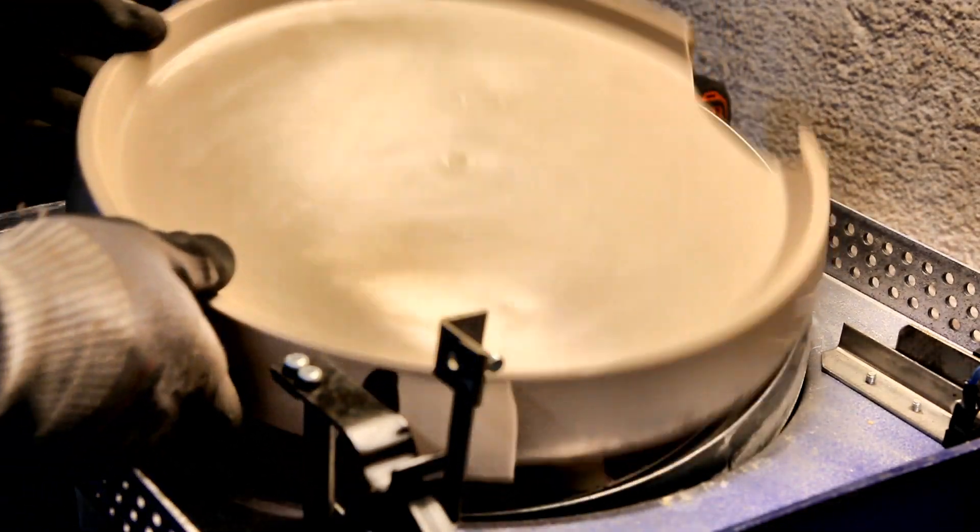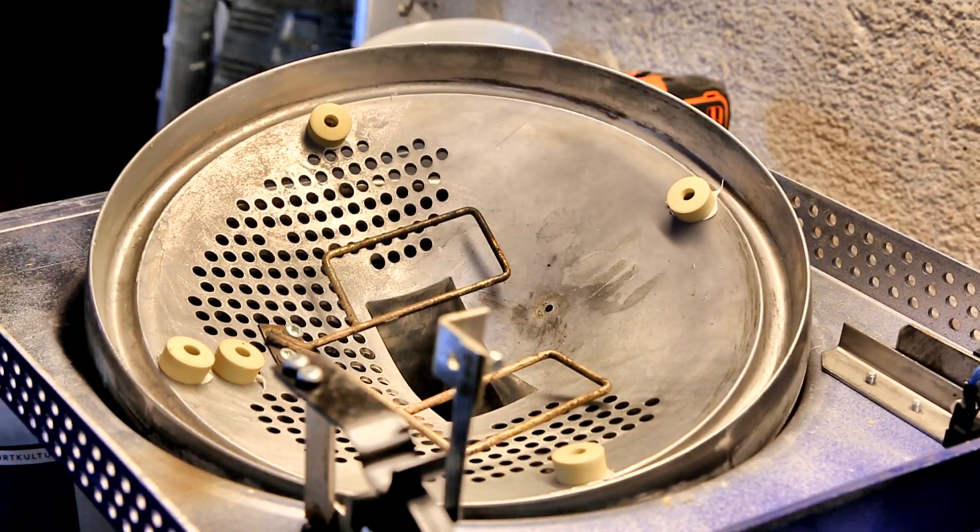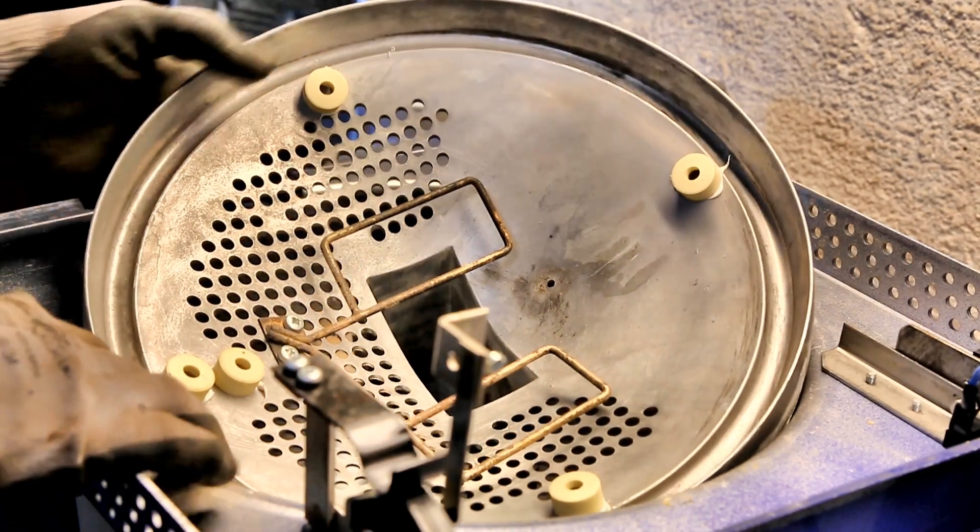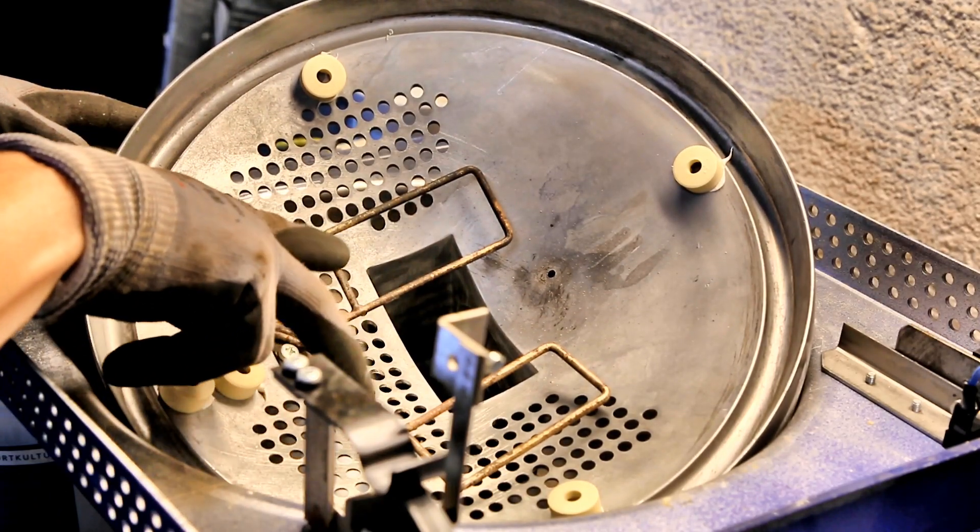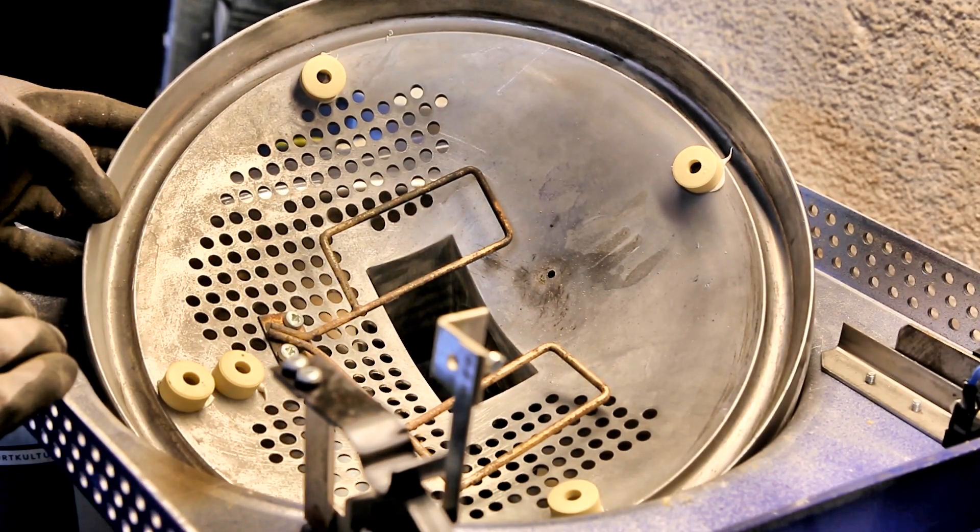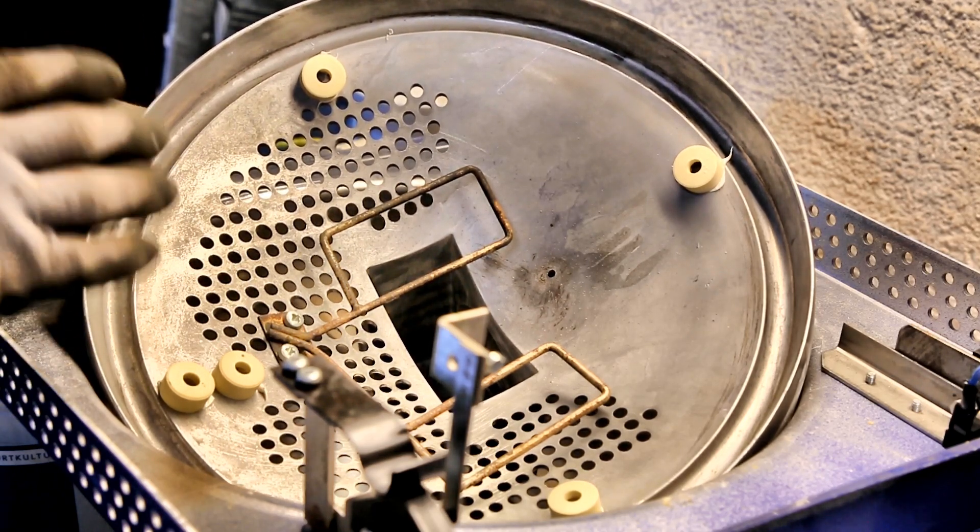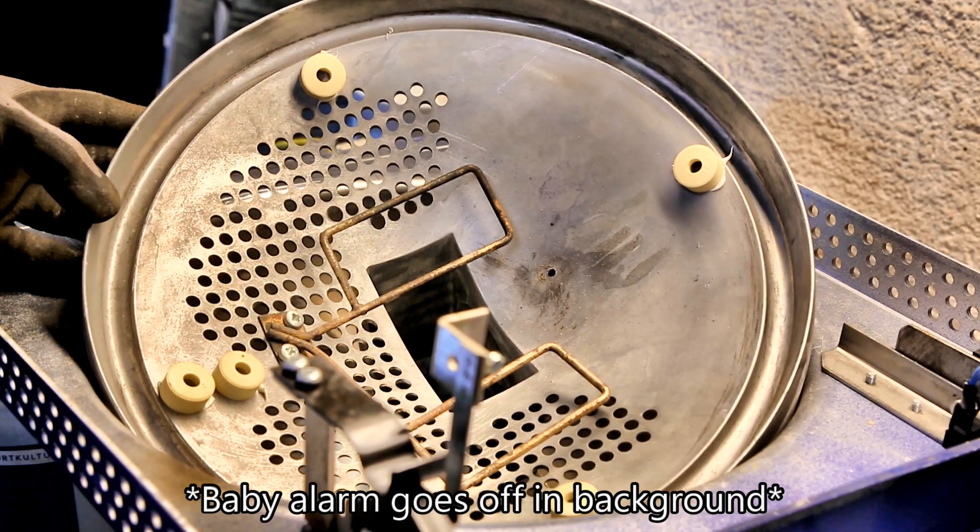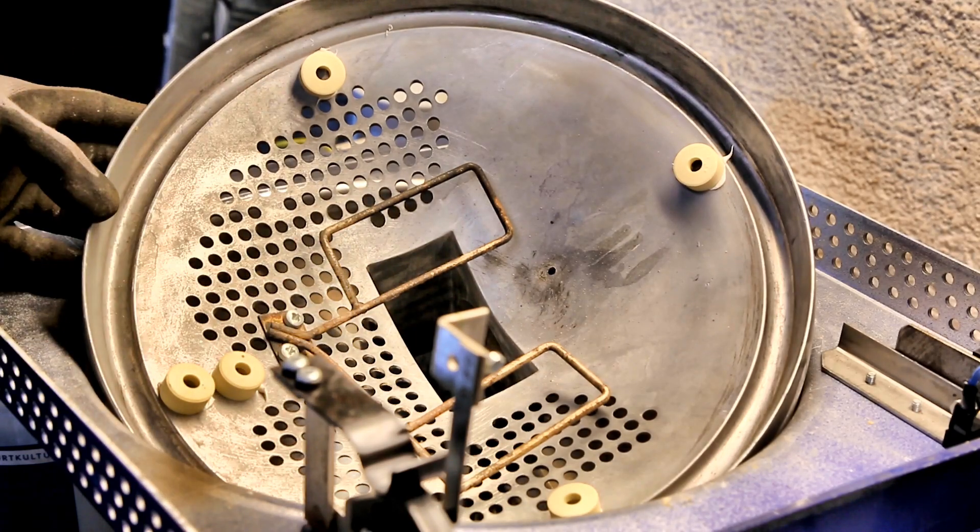The plastic cover was pretty brittle, so that simply broke off when I tried to remove it. Now, the inside, that is rather interesting. Because I got no idea why it has this, what looks like a dipole antenna. I do not know much about radar technology, so I hope somebody else does. So, leave a comment if you know why there is what looks like a dipole antenna inside the waveguide of a microwave oven.